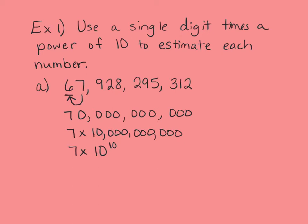We can also check it a different way. We could look at where the decimal place is and see that writing just 7 would move the decimal to be right behind the 7. Counting those places — 10 places that it moved — that's another way to confirm it's 7 times 10 to the tenth power.